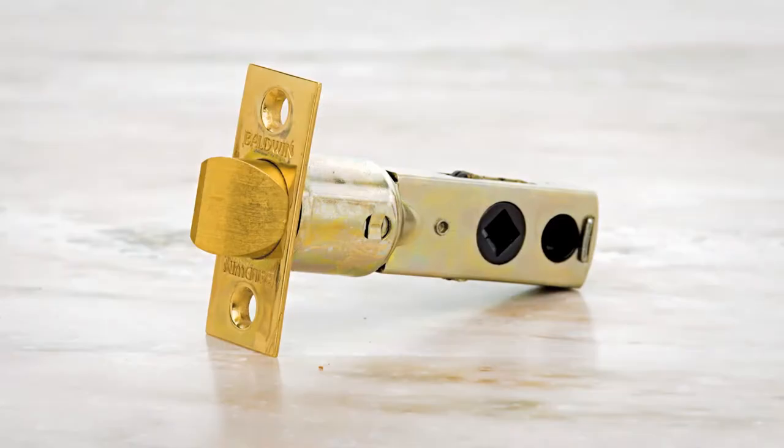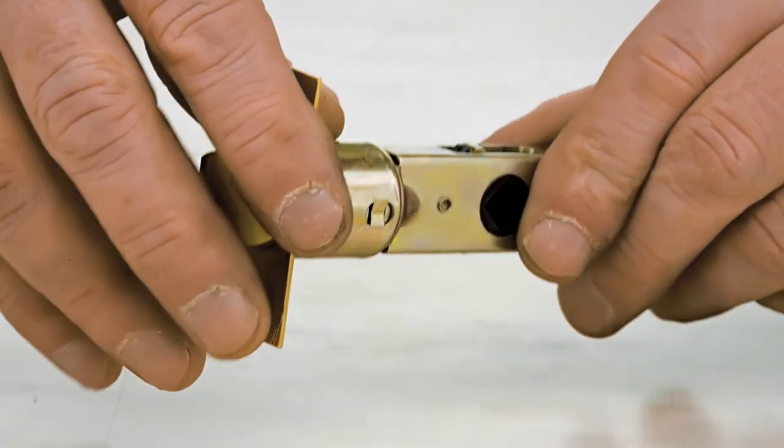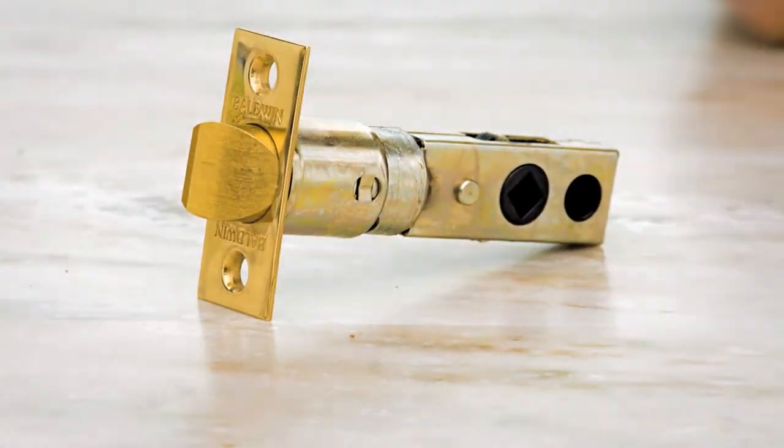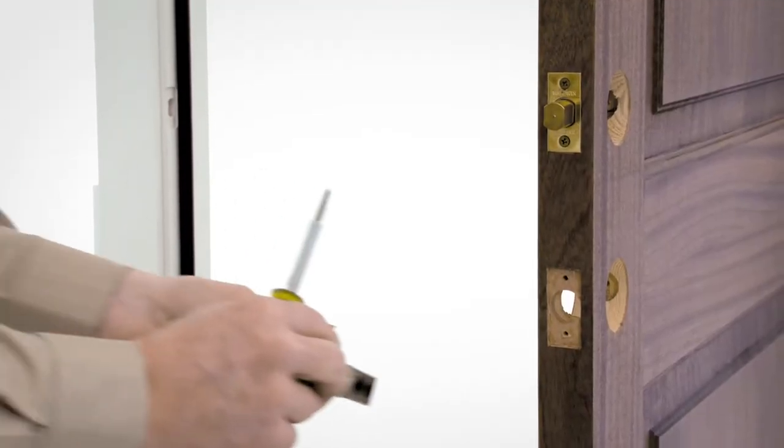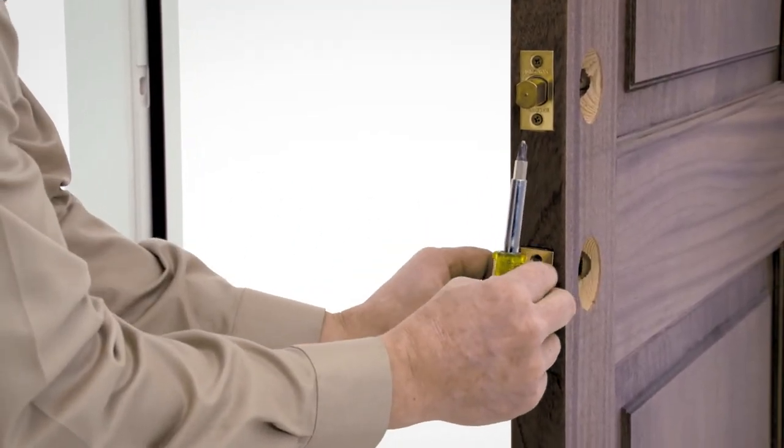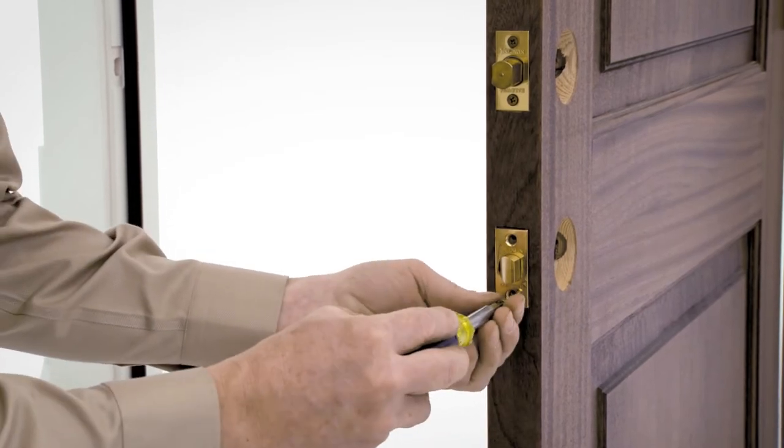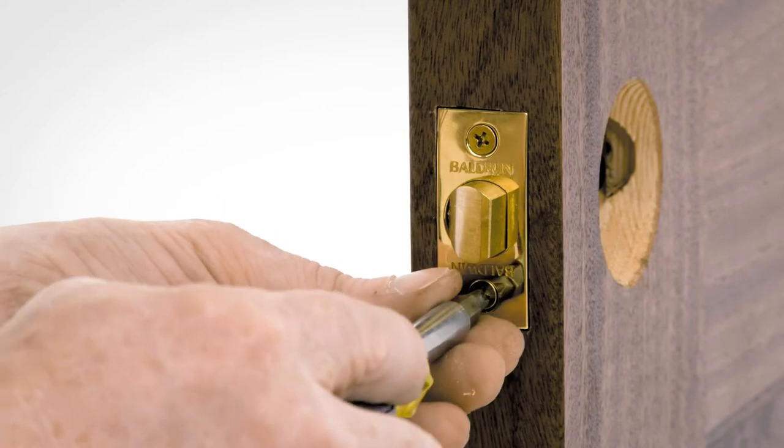Your latch is shipped with a 2-3/8 inch backset, which is the most common bracket. For a 2-3/4 inch backset, grasp body and twist faceplate 180 degrees until it stops. Insert latch with angled side of bolt facing the door jamb. Secure with 8 by 3/4 inch combination screws from the original latch so the latch is flush with the door.